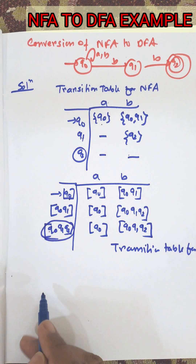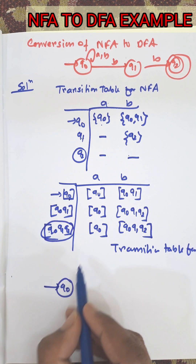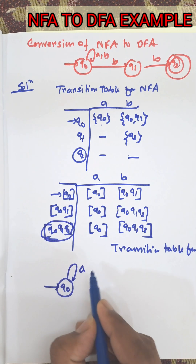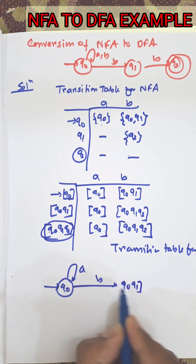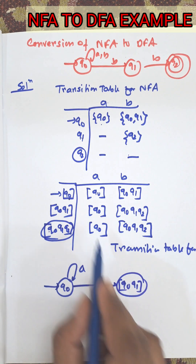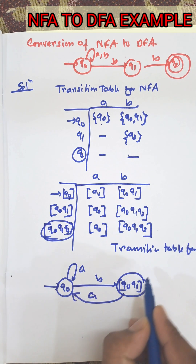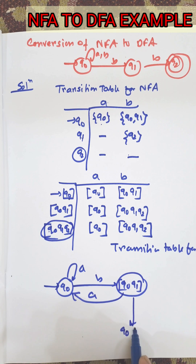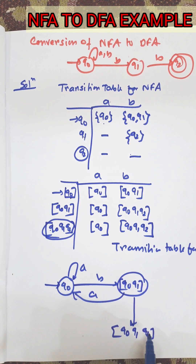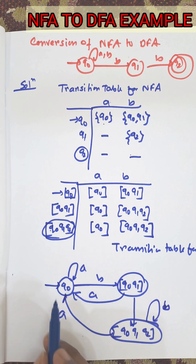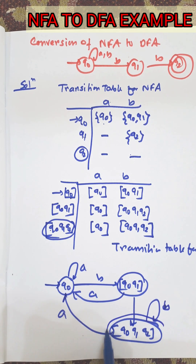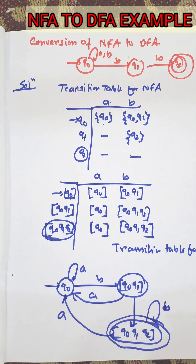Now we need to draw the diagram. The initial state is Q0. From Q0 on A goes to Q0, and from Q0 on B goes to {Q0, Q1}. From {Q0, Q1} on A goes to Q0, and on B goes to {Q0, Q1, Q2}. From {Q0, Q1, Q2} on A goes to Q0, and on B goes to {Q0, Q1, Q2}. As Q2 is the final state, {Q0, Q1, Q2} will be the final state of the DFA also.